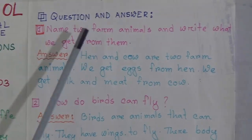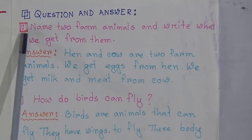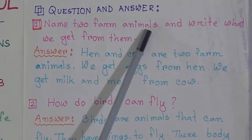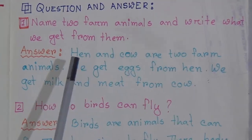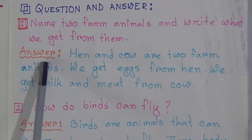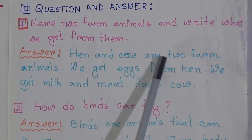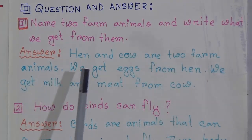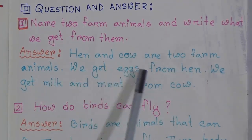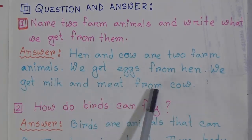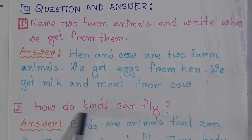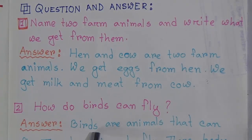Our first question is: name two farm animals and write what we get from them. The answer is: hen and cow are two farm animals. We get eggs from hen, and we get milk and meat from cow.